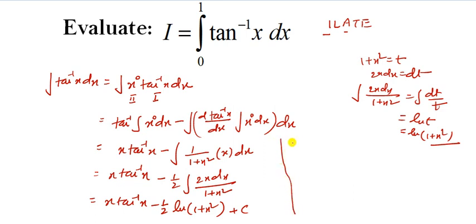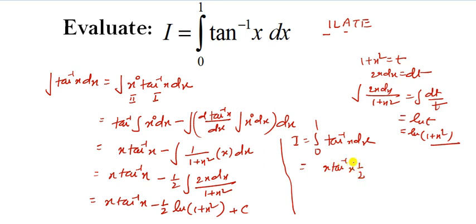Now, we have to find the definite integral value. So I equals the integral from 0 to 1 of tan inverse x dx. We can now apply the limits, since we have already integrated this function. So it is: [x·tan inverse x minus one-half of ln(1 plus x squared)] evaluated from 0 to 1.